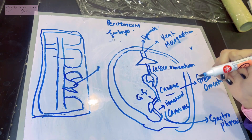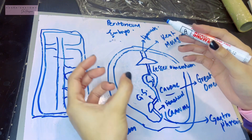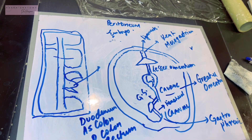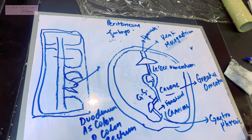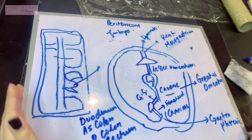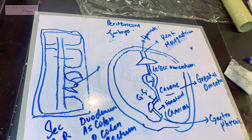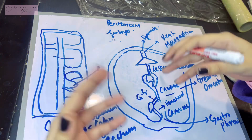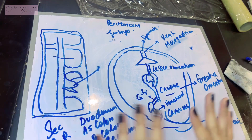The digestive tract organs that are retroperitoneal include the duodenum, the ascending colon, the descending colon, and the rectum. These all had a mesentery in embryonic life, but as those gut derivatives grew and took their eventual position, they lost their mesentery. These are therefore called secondary retroperitoneal organs — meaning once they were intraperitoneal, but by the end of embryonic life they became retroperitoneal.